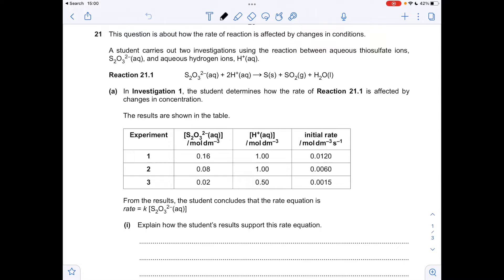Okay, so I'll make a start. We've got to use the results to show that the rate equation that the students derived is correct. So we've essentially got to show that the order with respect to thiosulfate is order one, and that it's zero order for the H+.